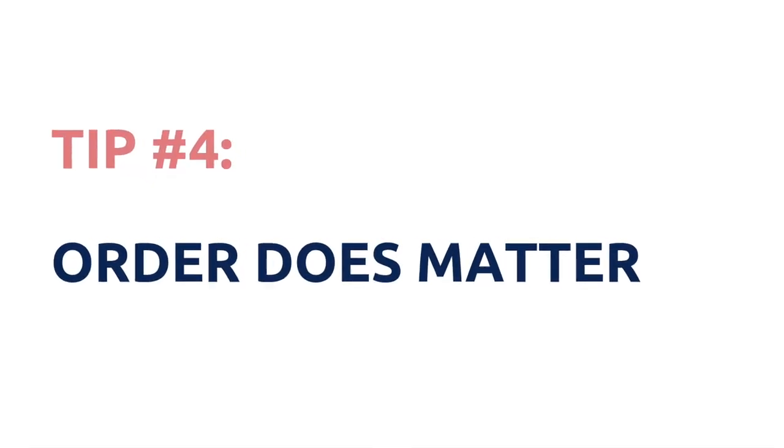Tip number four is that order does matter. When you are listing out the 10 activities in the common application section, you want to list them in order of relevance and importance. Pick activities that mean a lot to you, that you're really passionate about, and that align with your major. Usually my students would have their passion project, an app they created, or a business they started — something unique and related to their major — in the very first position. Then they'd list volunteering second because they've done it for three to four years and are passionate about helping others.